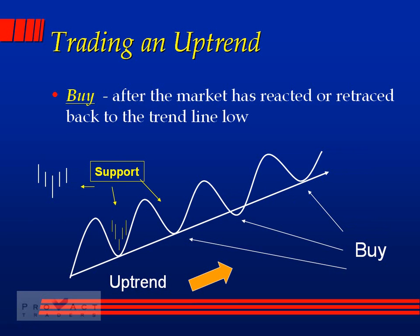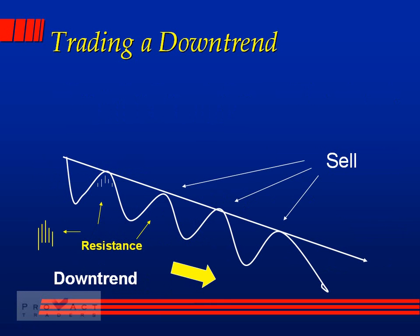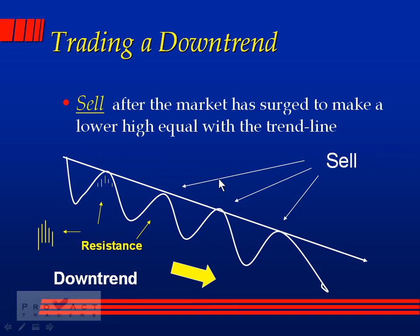Trading a downtrend is the opposite. First you need one, two, three points of resistance to confirm a downtrend. We sell on number three and exit the trade at the bottom of the trend wall. Wait until it comes back up to the trend wall, then sell again, and continue doing that as long as the market allows. We sell after the market has surged to make a lower high equal to the trend wall.